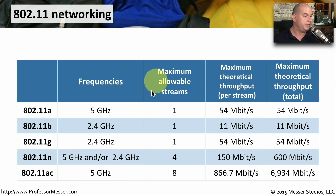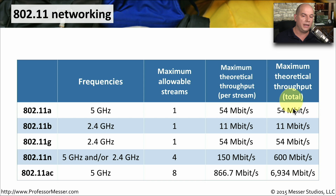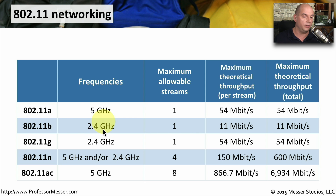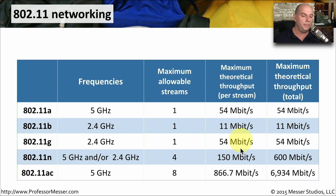Here's a summary of these wireless standards. 802.11a runs at 5 gigahertz with a maximum theoretical throughput of 54 megabits per second. 802.11b is a 2.4 gigahertz version running at 11 megabits per second. 802.11g was the update to b, still running at 2.4 gigahertz but with throughput updated to 54 megabits per second.